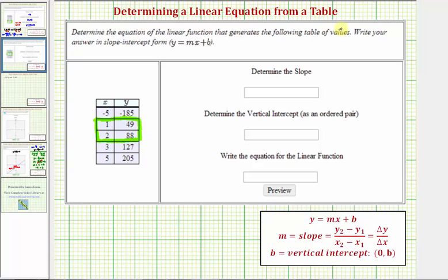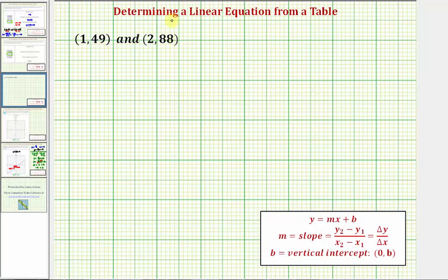So now we'll find our slope using the point one comma 49 and the point two comma 88, which we see here, and to keep things organized, let's call these coordinates x sub one comma y sub one, and these coordinates x sub two comma y sub two.